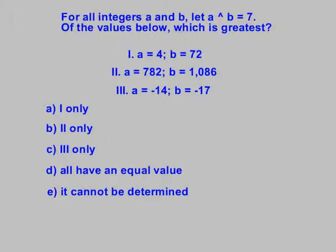Now, this is a goofy problem. This is one that's more of a puzzle than a math question. But it's easy points. Anything you put in for a, anything you put in for b, comes up 7. So the correct answer here is d. They all have an equal value.